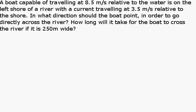A boat capable of traveling at 8.5 meters per second relative to the water is on the left shore of a river with a current traveling at 3.5 meters per second relative to the shore. In what direction should the boat point in order to go directly across the river?